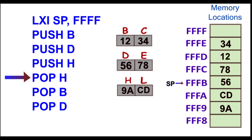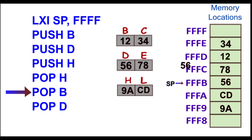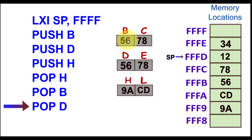After POP H we are at FFFB. Next is POP B — note that during PUSH the order was PUSH B, PUSH D, PUSH H, but here we are doing POP H first, then POP B instead of POP D. With POP B, the data 56 is stored in register B and the stack pointer increments, then the next data goes to register C and the stack pointer increments again. I purposely changed the pop order to demonstrate what happens when the sequence is altered — the data from DE gets loaded into BC.